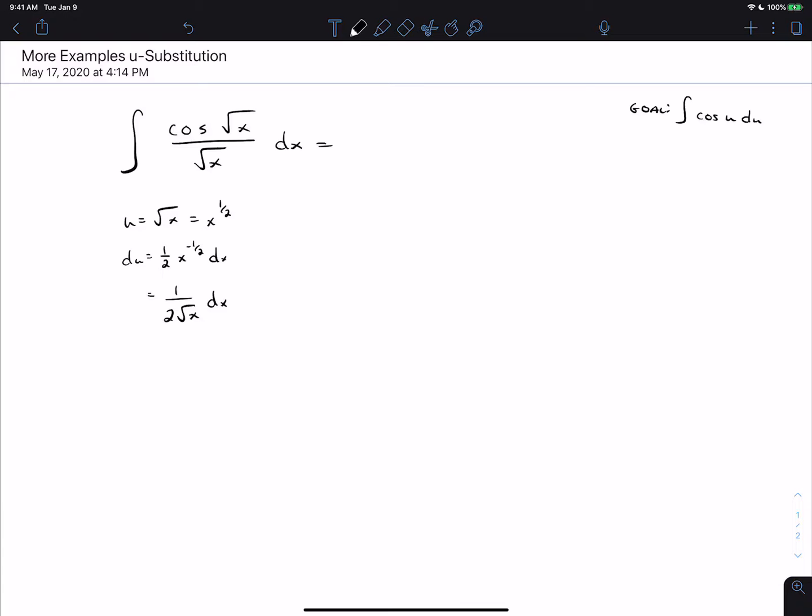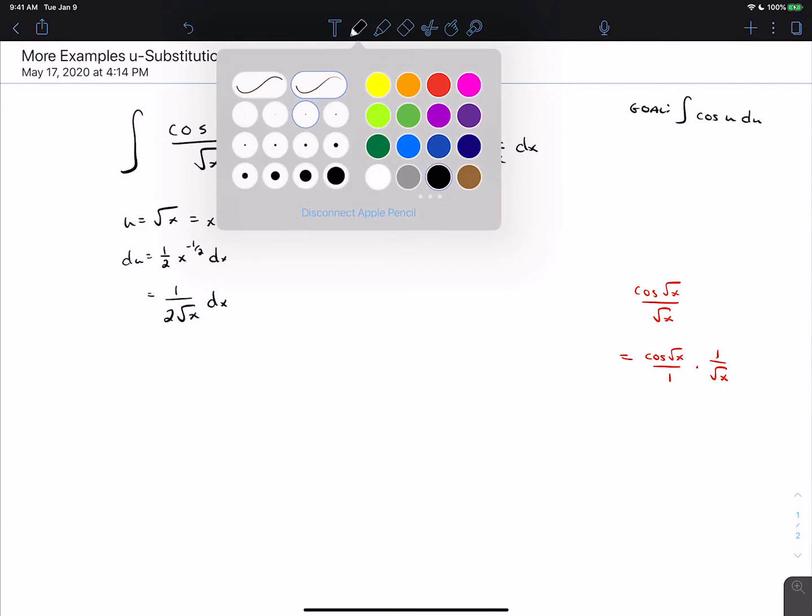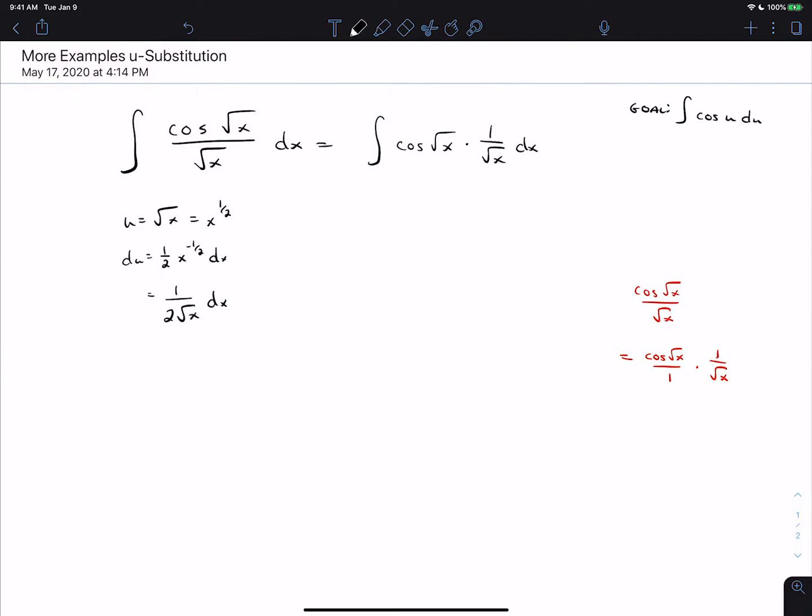Because of that, we're going to be able to get this to work by splitting this into cosine square root of x times one over the square root of x dx. The algebra there is that cosine square root of x over the square root of x is the same thing as cosine square root of x over one times one over the square root of x. So we're allowed to split that because when you multiply fractions, you just go straight across.